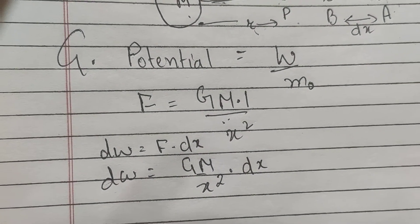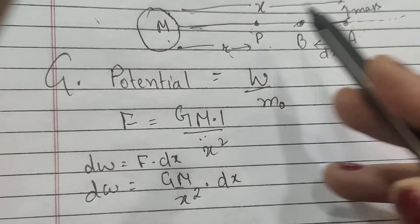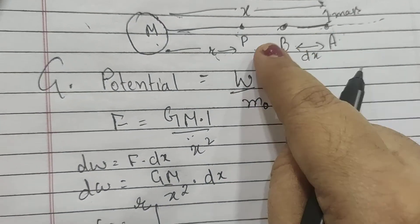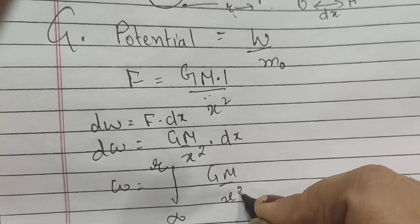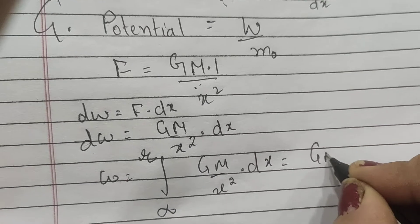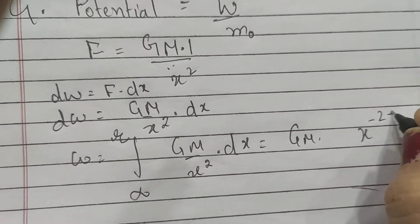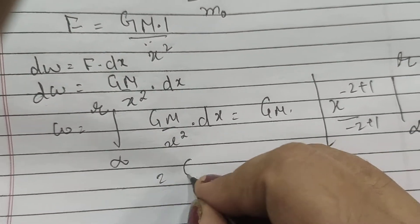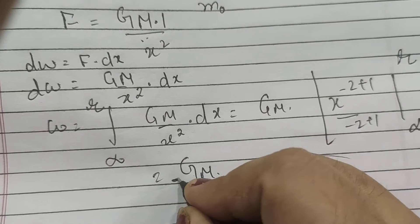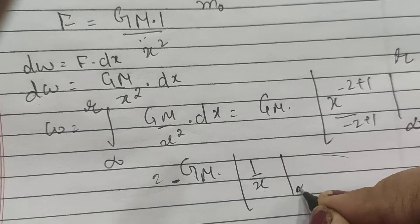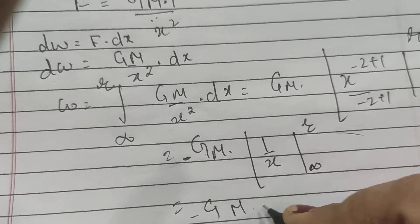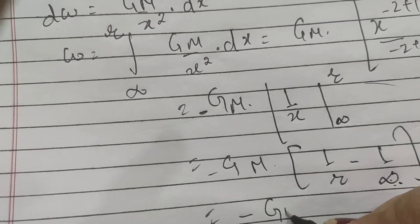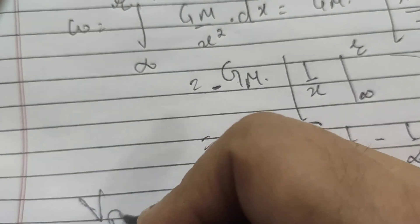We have to find the total work done in taking the body from infinity to point P. Work done is given by integrating from infinity to r: W = ∫ GM / x² dx = GM ∫ x⁻² dx. Integrating gives GM × [ x⁻¹ / (−1) ] from infinity to r, which equals −GM × [1/r − 1/∞]. Since 1/∞ = 0, this becomes −GM/r. This is the gravitational potential.